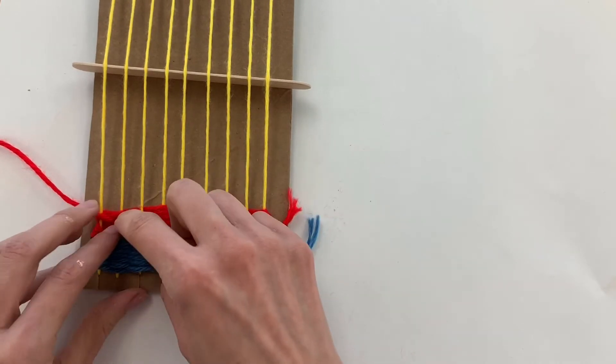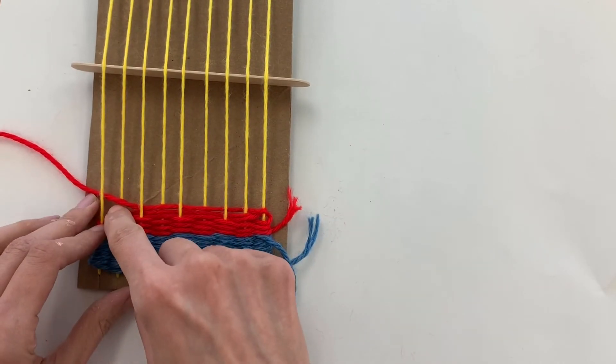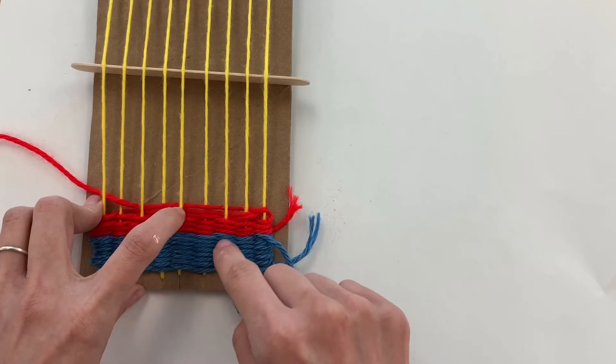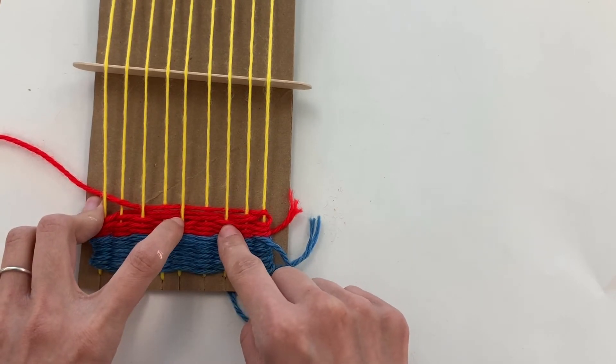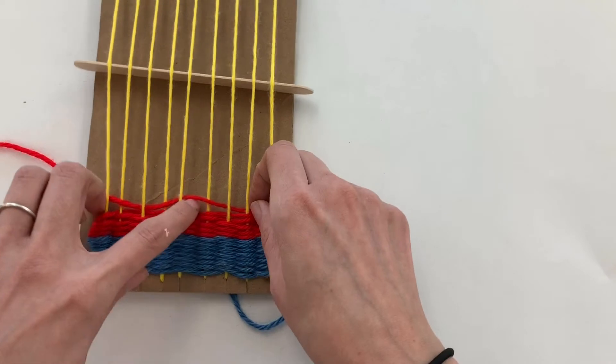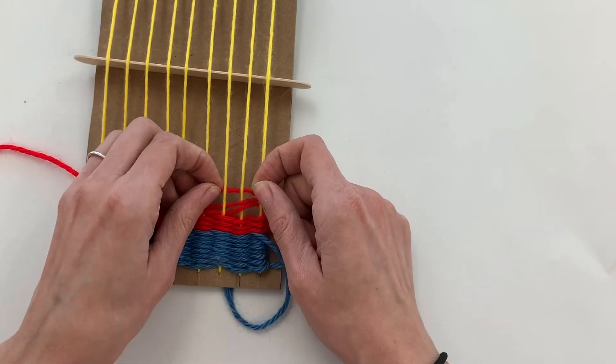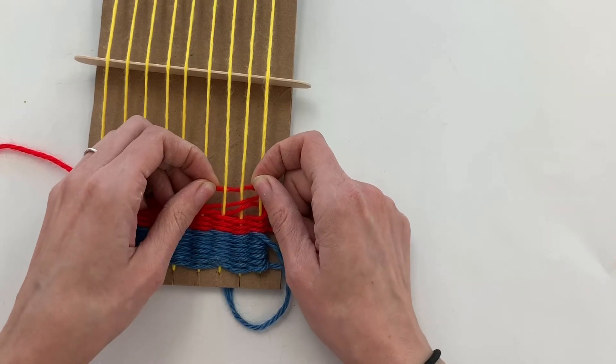So going back this way, I'm checking to see that I went under, over, under, all the way across, and I see in this row, oh, I see right here, I went under these two warp strings, two at a time, instead of just going under one.